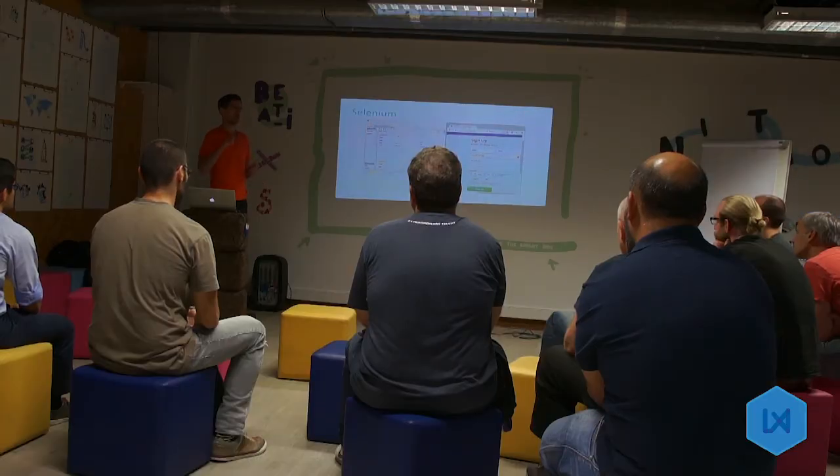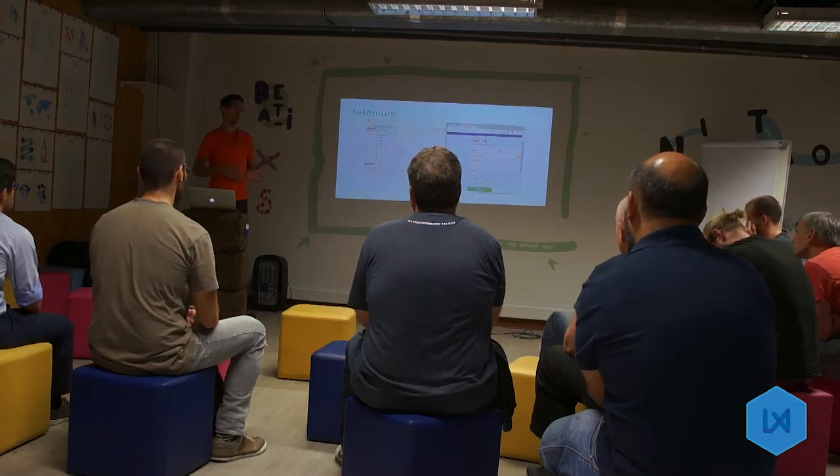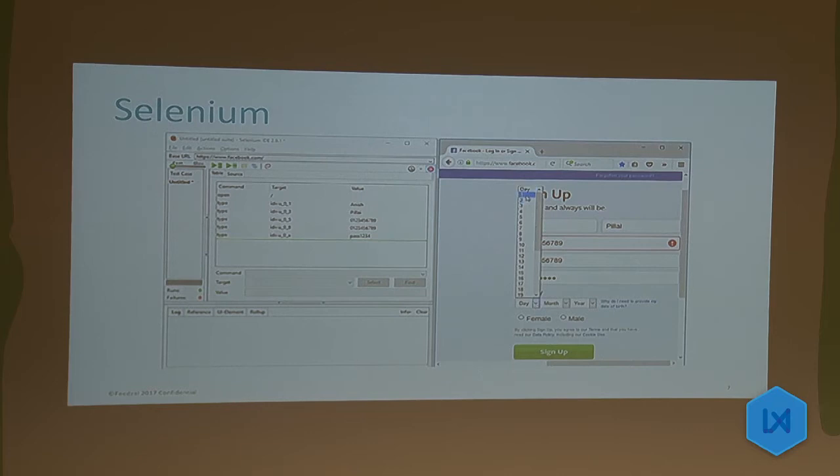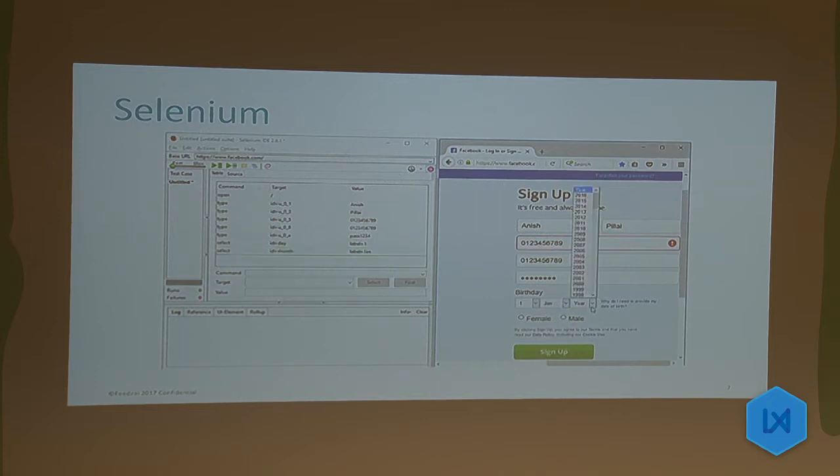Selenium is a tool that allows us to automate browsers, to simulate user behavior — click here, type in an input — and we can use that to test our application: try to log in, see if the login was successful, and make several types of assertions. The main thing about Selenium is that it tests the application end-to-end. We use it to test the whole application, so they work as validation tests.